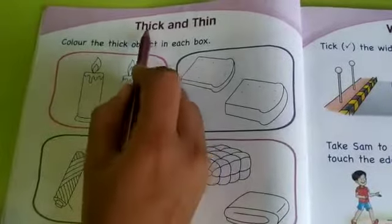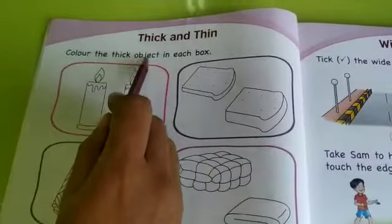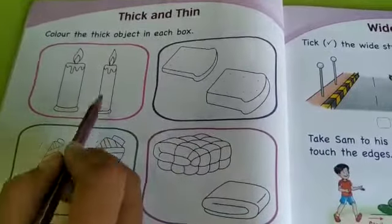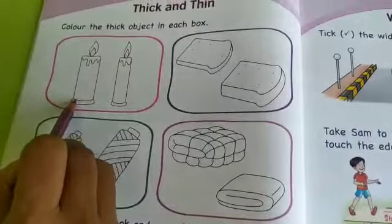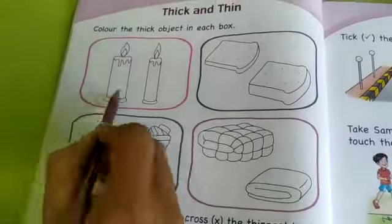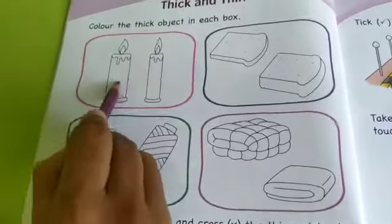Now page 8, topic thick and thin. Color the thick object in each box. So you have understood which one is thick. You will color that thick object. Now candle is thick here, so you will color the thick object.